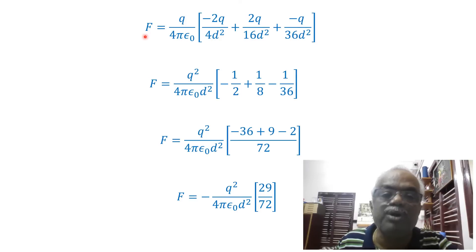We will simplify it further. Now we have F is equal to q divided by 4 pi epsilon naught multiplied by minus 2q over 4d squared plus 2q over 16d squared plus minus q over 36d squared. Now you can simplify this. This 2 will cancel with 4, this will become 2. Similarly here 2 will cancel with 16, which will become 8.